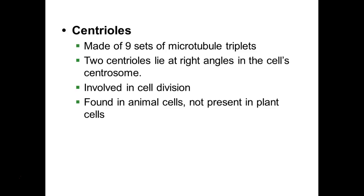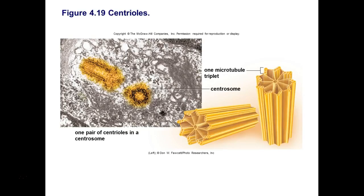Centrioles are made of nine sets of microtubule triplets. They lie at right angles in the cell's centrosome, and their function is in cell division. When we get to the end of the semester, we'll look at DNA replication and cell division and examine centrioles in more detail then. We find centrioles in animal cells — they are not present in plant cells. Here you can see the centrioles; there's a pair of centrioles in a centrosome.